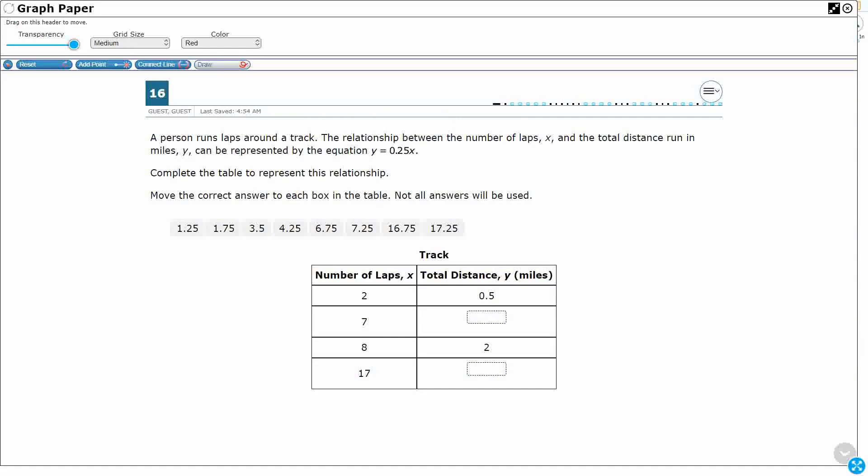A person runs a lap around a track, so they give us the relationship between x, that's the number of laps, and then y, total distance. They give us this equation, y equals 0.25x.